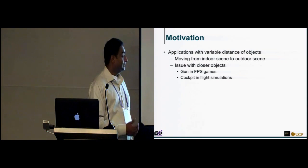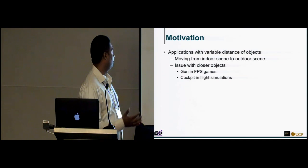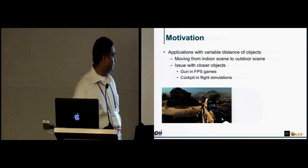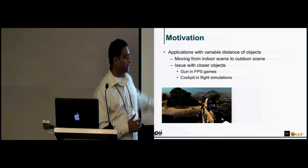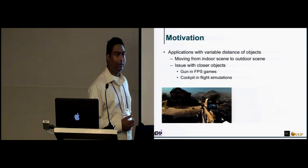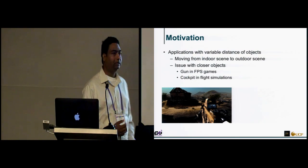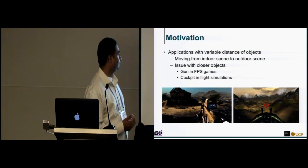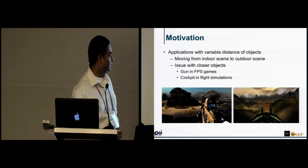If you have applications where distances are changing — for example, motion from an indoor to an outdoor scene — or closer objects like in a first-person shooter game where a gun is close to you and other objects are far away, the fixed parameter approach must optimize for the gun, which reduces depth perception. Similarly, in a flying simulation with a cockpit up close and distant objects, you perceive very little depth.